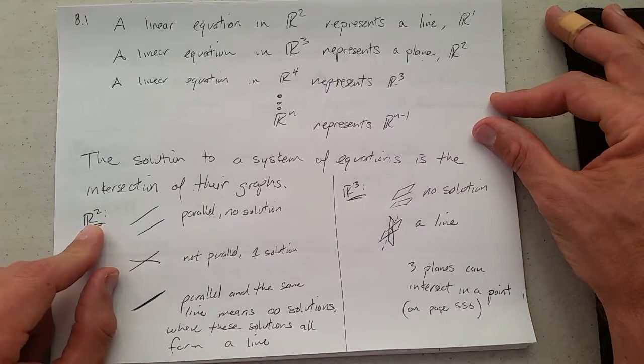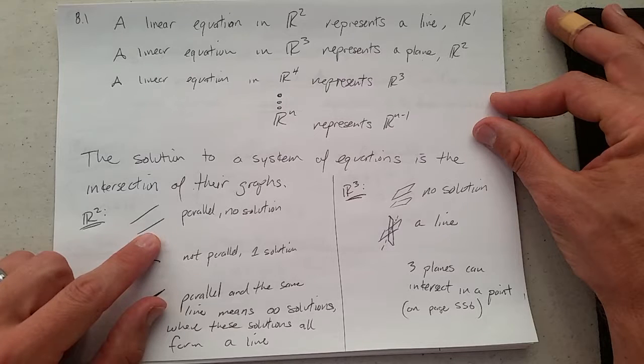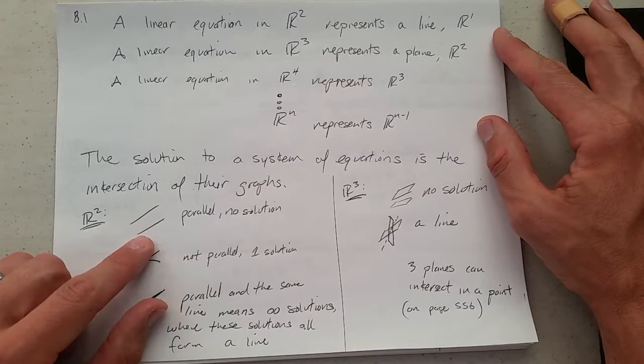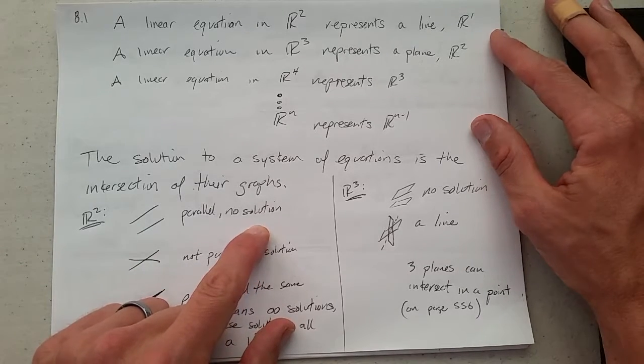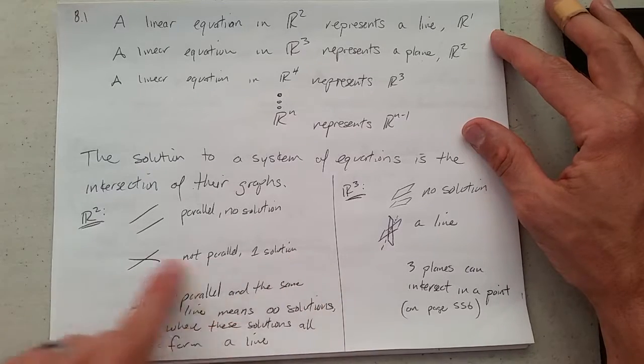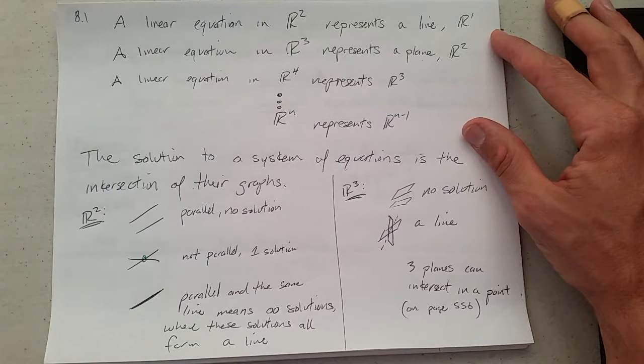We'll start in two-dimensional space. A linear graph will be a line. You could have parallel lines not touching, which would be no solution—they have no points in common. If they're not parallel, they have to cross in exactly one point, so you would have one solution, like the example we just did.